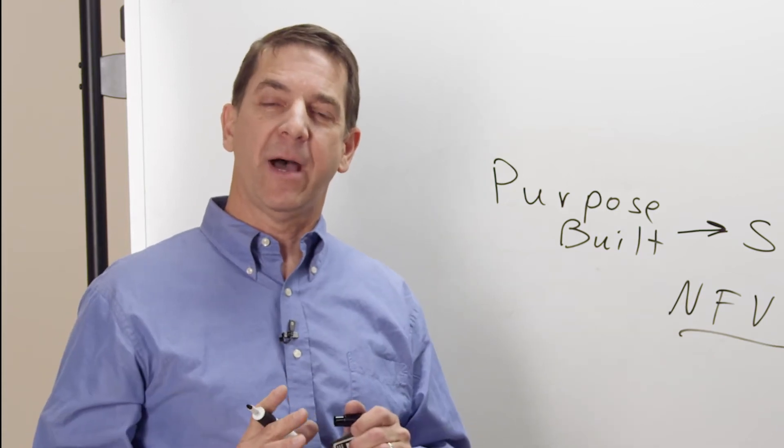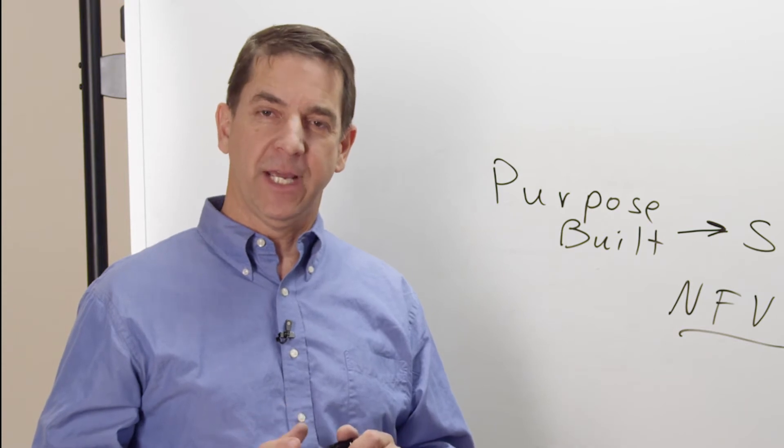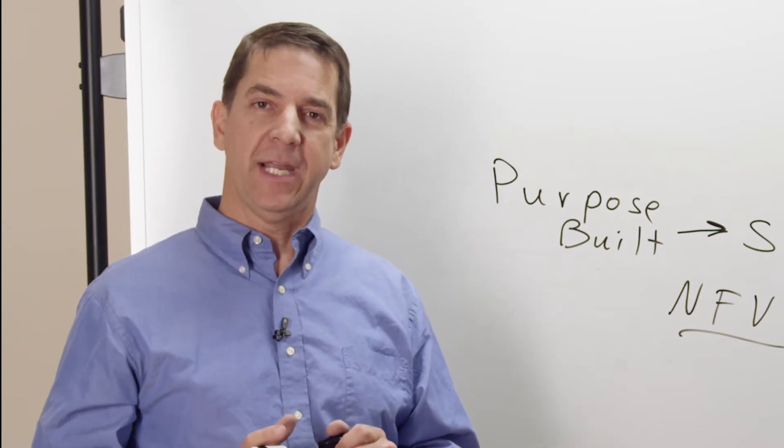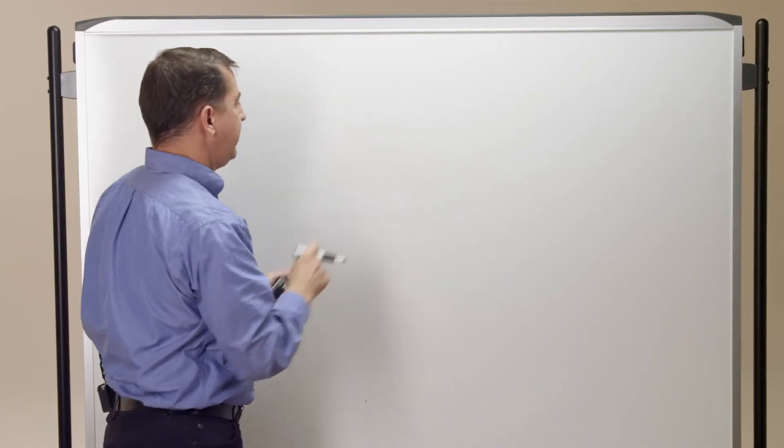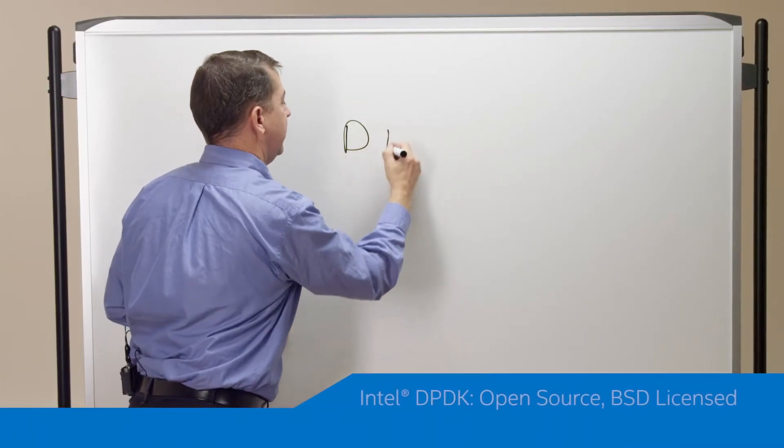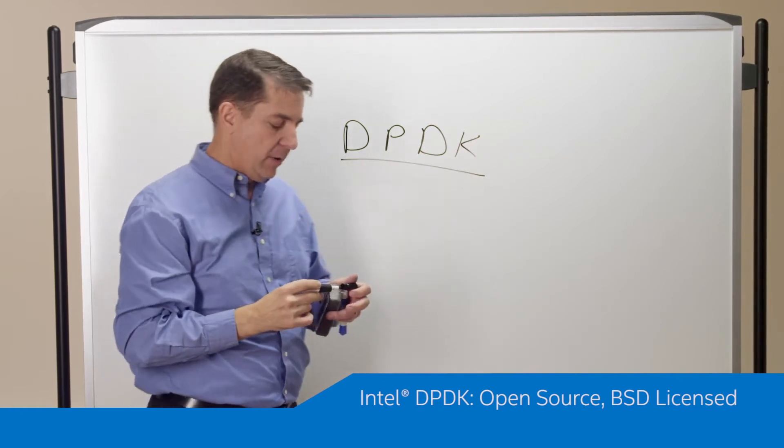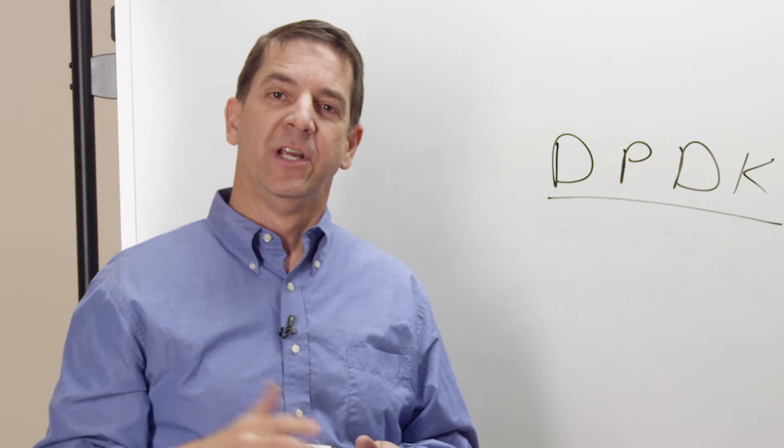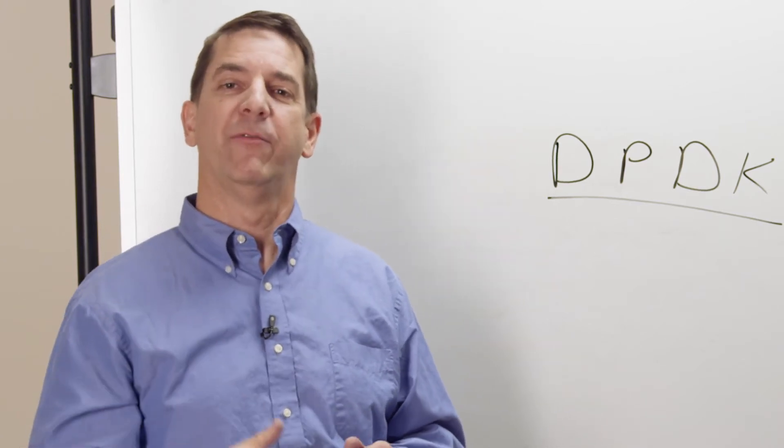I'm going to talk a little bit today about something my team's been working on called the Intel Data Plane Development Kit, or Intel DPDK, and how it's helping this transition become possible. So the Data Plane Development Kit is really all about using standard Intel architecture processors with a set of software libraries on top of it to give you much higher performance.